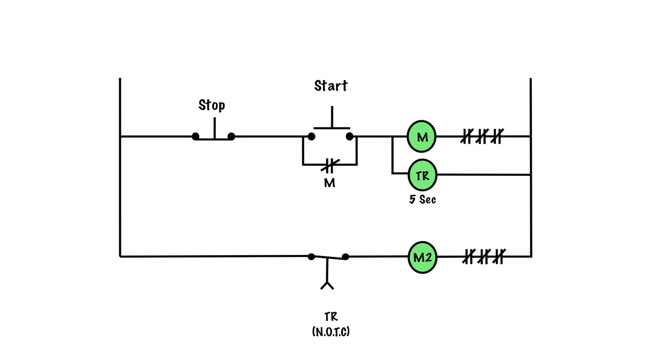So again, the sequence: press start, M energizes, contacts close, TR energizes at the same time. 5 seconds later, this counts for 5 seconds, then this set of contacts closes, and M2 starts. So M1 starts instantly, M2 starts 5 seconds later.